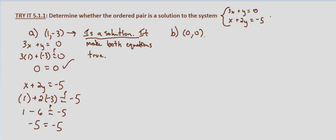Now checking (0, 0). We want to know does 3 times 0 plus 0 equal zero? Well, 3 times zero is zero plus zero. Does that equal zero? Yes, zero equals zero. So it checks with our first equation.